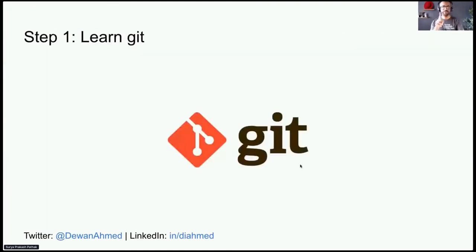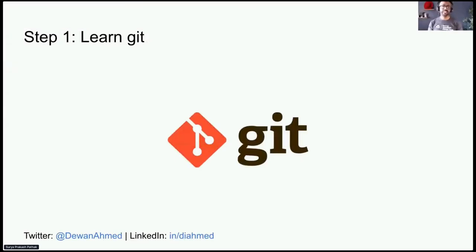This is the first step of the three steps to getting your first open source PR: learn Git. Whether you're a software developer, UX/UI designer, or project manager, most of what happens in open source projects happens via Git. So learning Git is an essential skill. I've added a link in the resource section on how you can learn Git, but you can choose any medium of your choice.